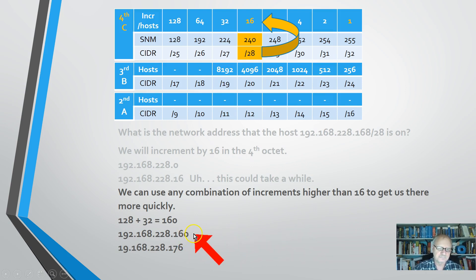that the first host address here is 161. The broadcast address is 175. The last usable address is 174. And of course, my subnet mask is slash 28, which is the same as 255.255.255.240. So that's it. But 160 is the network that this address is on.